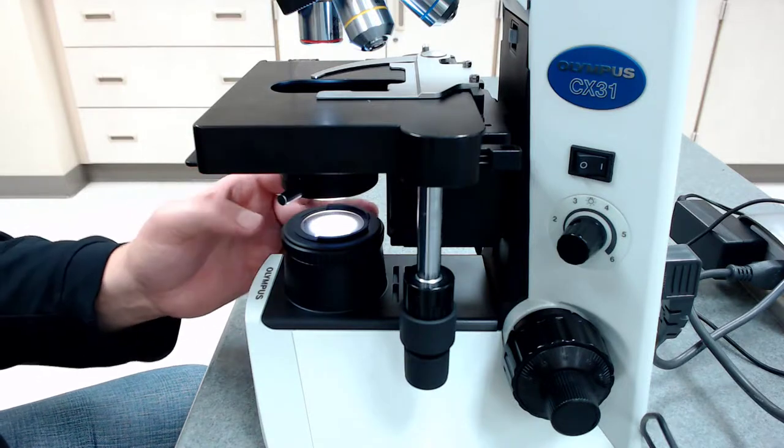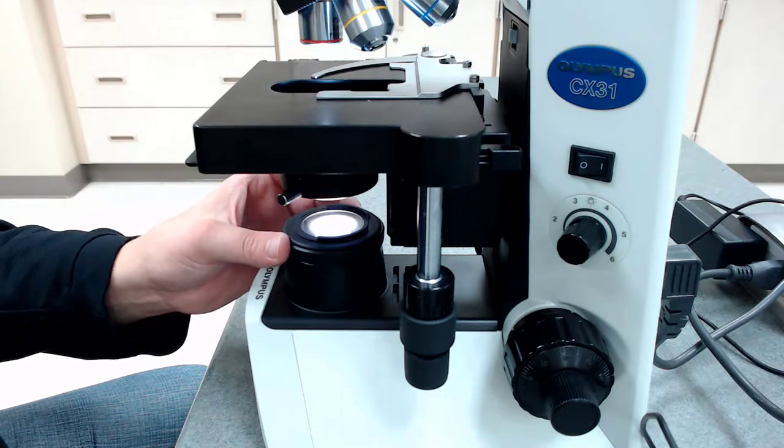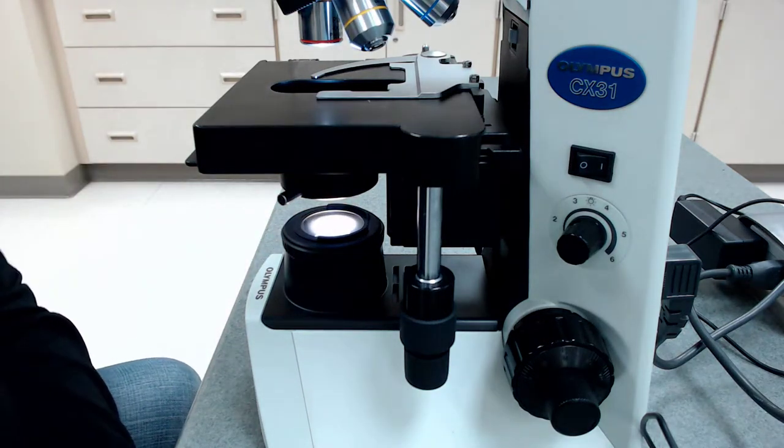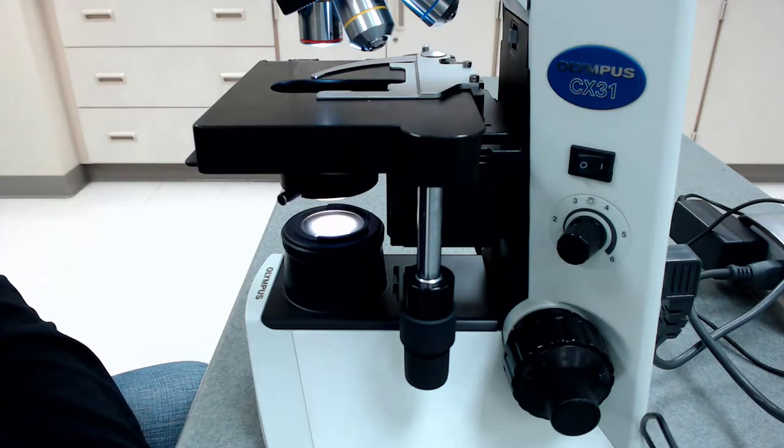This microscope also has this ribbed portion here on the bottom where I can control the light right at the bulb, but I rarely ever have to use that. So that's kind of the art of using a microscope is knowing how to fiddle with light intensity to see what you need to see.